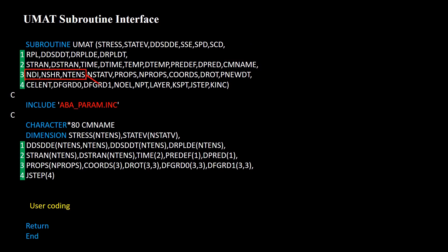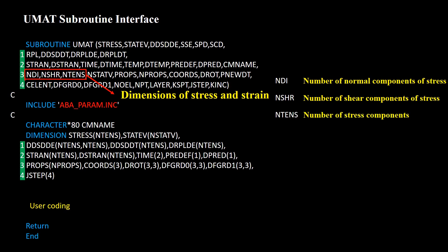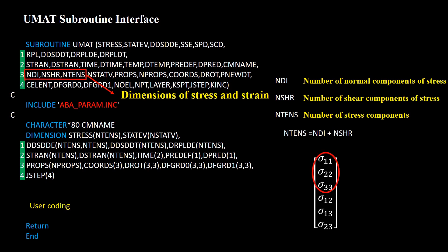Three variables show the dimension of the stress and strain tensors. The first shows the number of normal components, the second shows the number of shear components, and the third is the total number of stress components — equal to the sum of the first and second. In three-dimensional problems, the stress array contains six components: three normal components and three shear components.